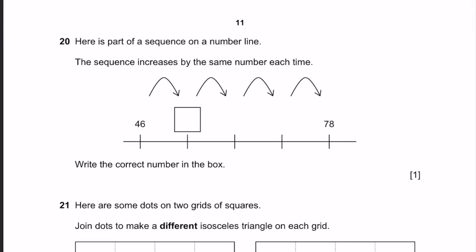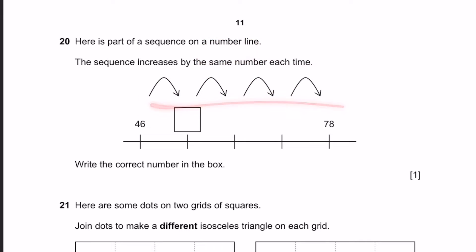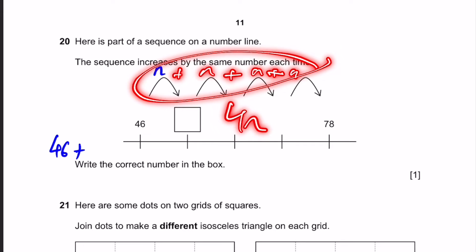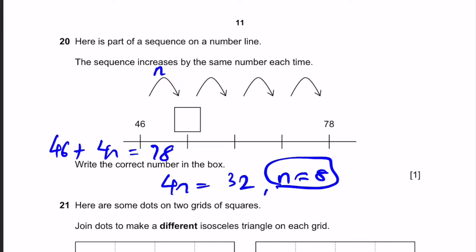Question 20. Here's part of a sequence on a number line. The sequence increases by the same number each time. Write the correct number in the box. The sequence increases by a number n four times, going from 46 to 78. So 46 plus 4n equals 78, meaning 4n equals 32, and n equals 8. The missing number is 46 plus 8, which is 54.